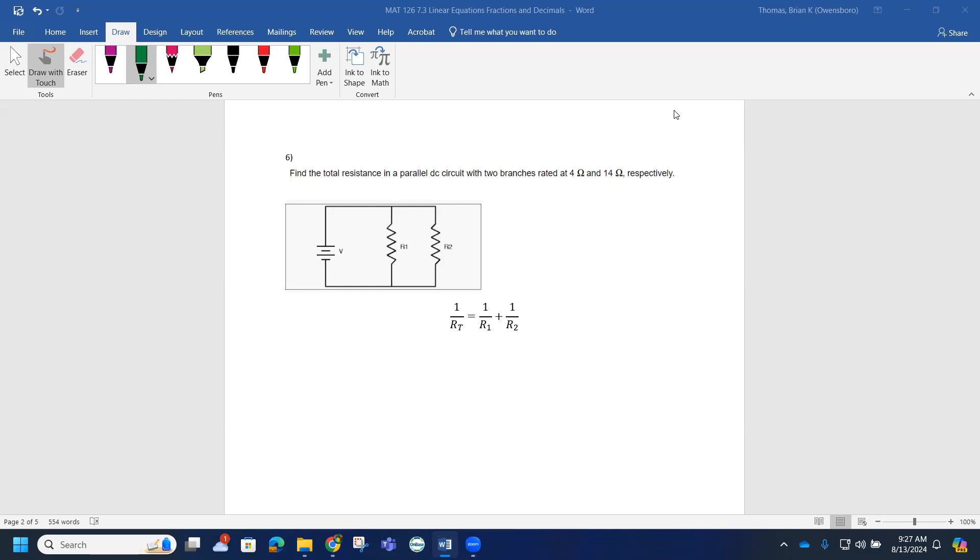Looking at example 6, we have an application: find the total resistance in a parallel DC circuit with two branches rated at 4 ohms and 14 ohms respectively. Again, I'm not the circuit guy—y'all will probably be more in tune with this, and your instructor may show you some stronger formulas than this, but this is the traditional formula to start with, and then it can be modified with algebra.